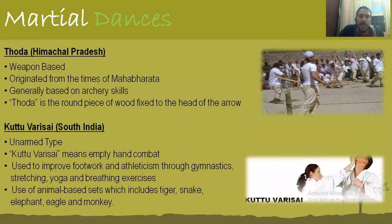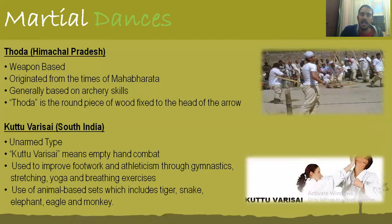Thoda is a weapon-based martial art available since the times of the Mahabharata and is completely to do with archery — a round piece of wood fixed to an arrow. Kutuvarisai is a completely unarmed variant where you follow patterns of tiger, snake, and elephant. Breathing is a very important part of Kutuvarisai — the ability to control and release your breath while punching helps conserve energy.